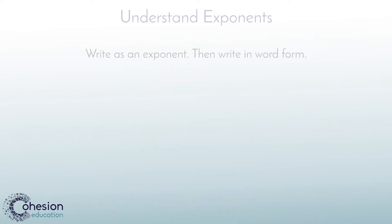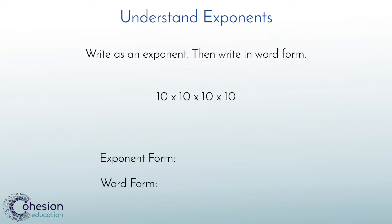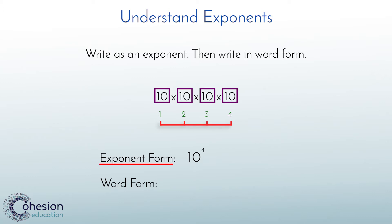First, to understand exponents, let's take a look at how to use the exponent to represent repeated factors and how to read the exponent. The equation we have is 10 times 10 times 10 times 10. To represent this equation as an exponent we will need to write the base number, which is 10, and how many times the number is being multiplied, which is 4.